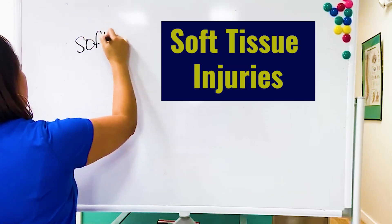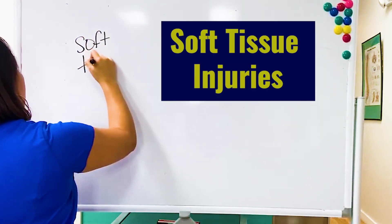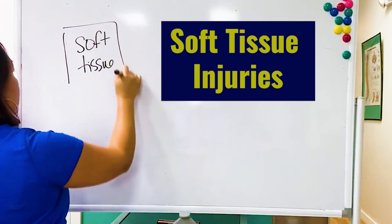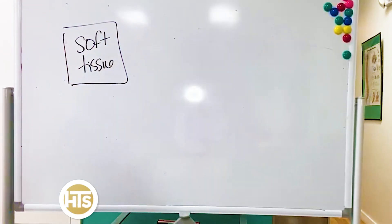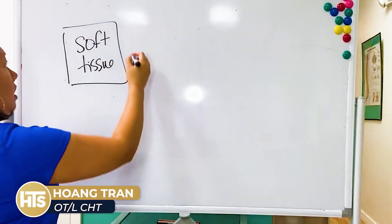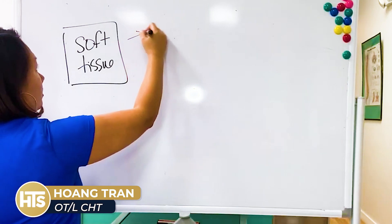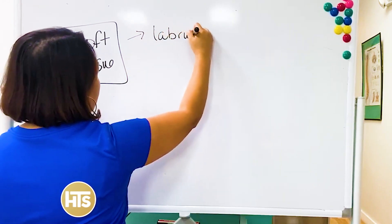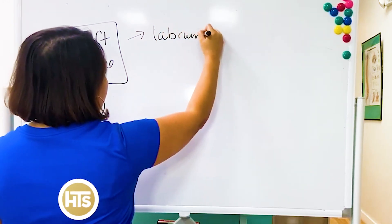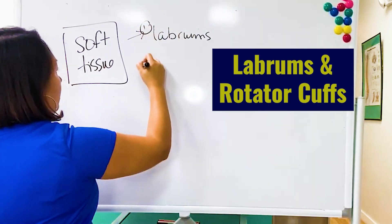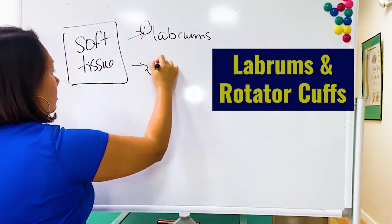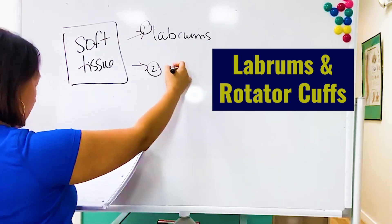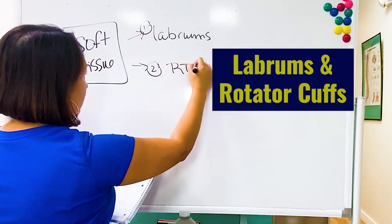Soft tissue types of injuries. We're going to talk about labrums and rotator cuffs.